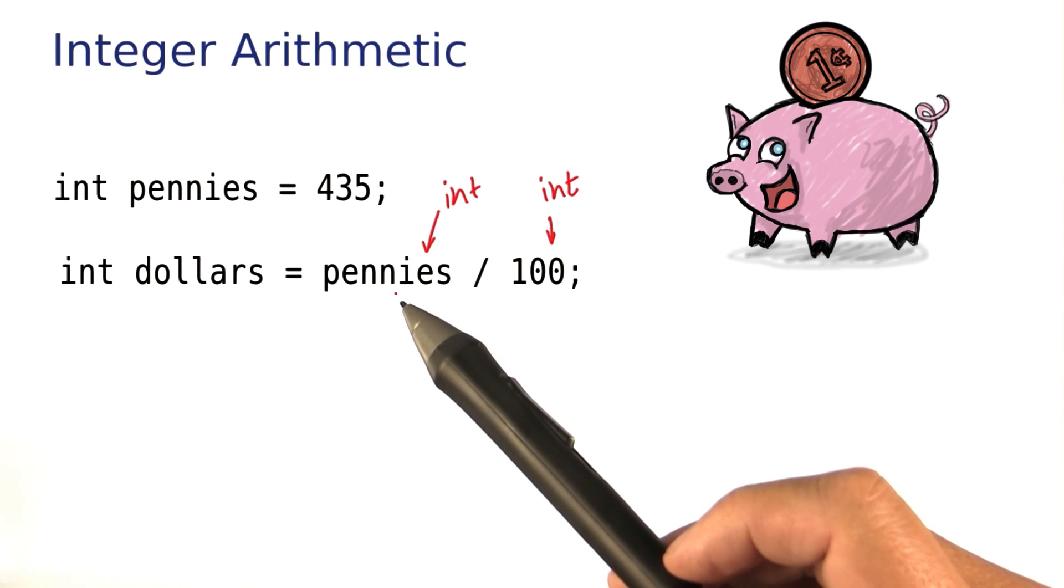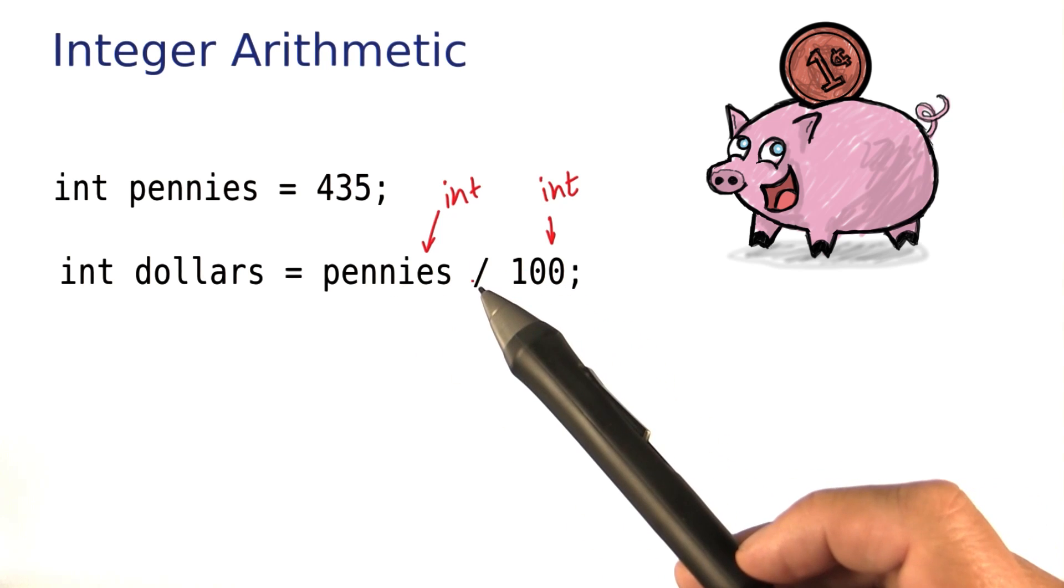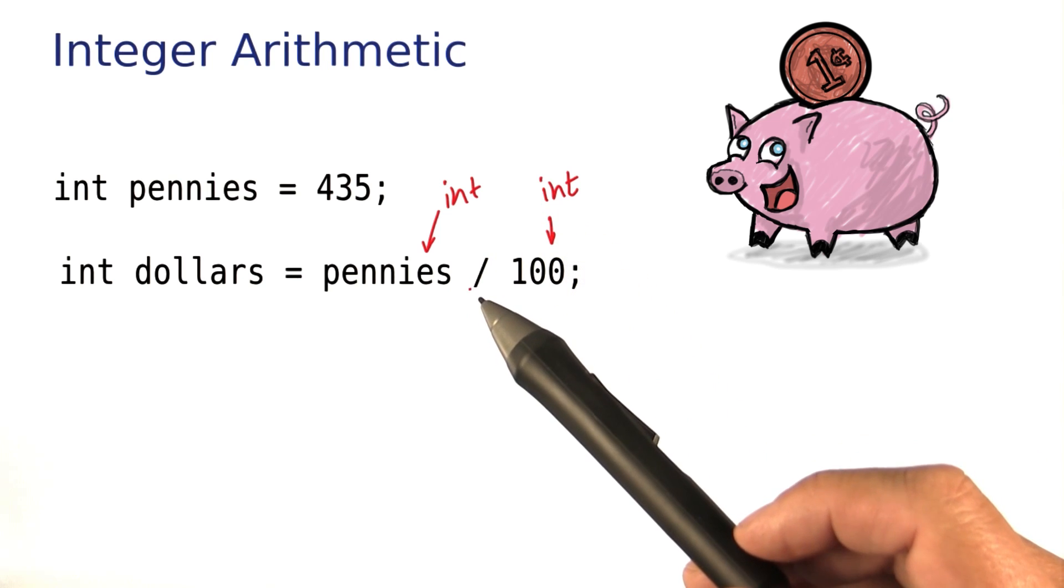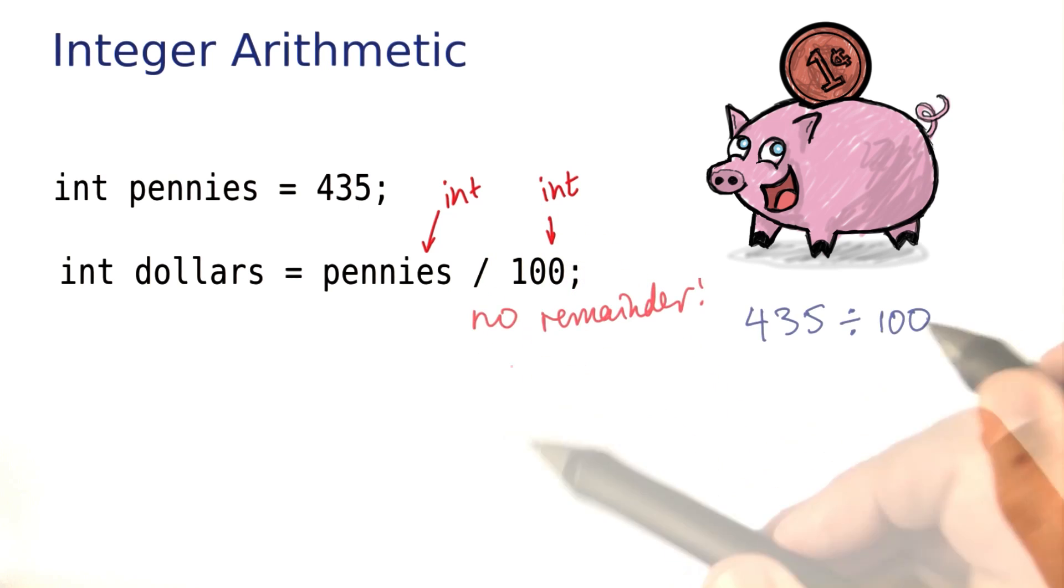When both operands on the left and on the right hand side of the division slash are integers, then the quotient is formed, and the remainder is discarded.